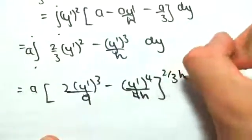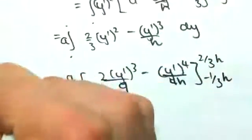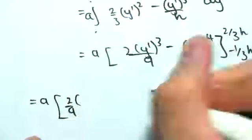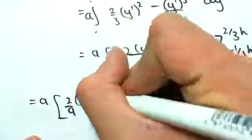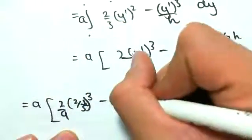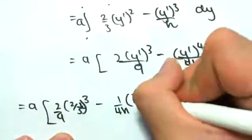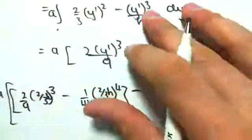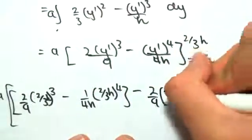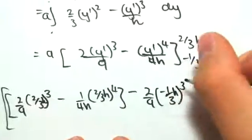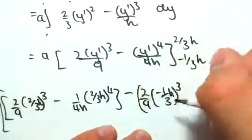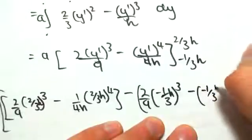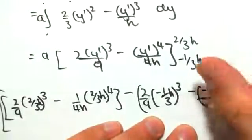So 2/3 h minus 1/3 h. Substituting all this in, we would have a outside of 2 on 9, 2 on 3 h cubed minus 1 on 4h outside of 2 on 3 h to the power of 4. And this is minus 2 on 9, minus 1/3 h cubed, minus 1/3 h to the power of 4 on top of 4h.